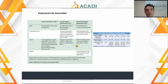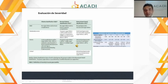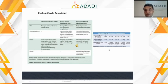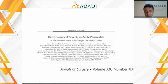Las guías recomiendan la clasificación de Atlanta modificada, que agrupa a los pacientes en tres categorías dependiendo de la presencia de disfunción orgánica y si es transitoria o permanente, o la presencia de complicación local, específicamente colecciones necróticas agudas. La disfunción transitoria se diagnostica con los criterios de Marshall, donde numéricamente se valora el compromiso respiratorio, renal y cardiovascular del paciente para clasificarlo y establecer a qué categoría pertenece, qué grado de internación necesita y en qué contexto.